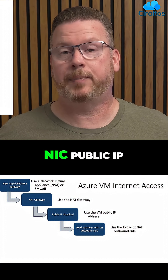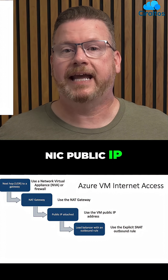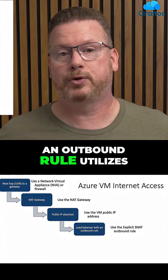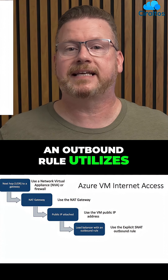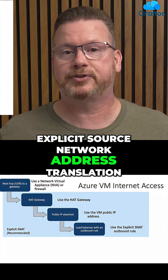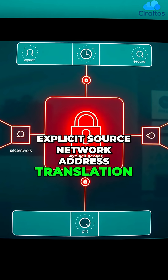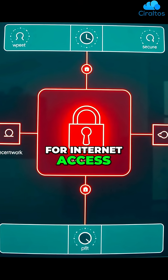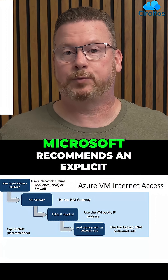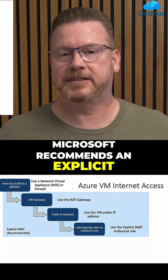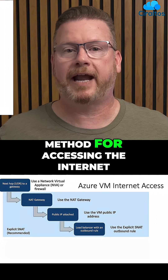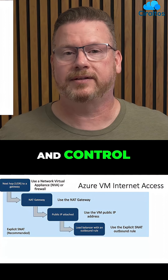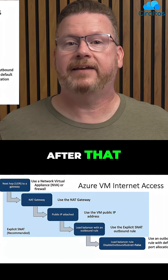The NAT gateway, NIC public IP, and load balancer with an outbound rule utilize explicit source network address translation, or SNAT, for internet access. Microsoft recommends an explicit method for accessing the internet — one that we define and control.